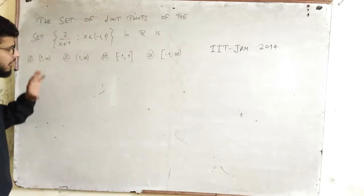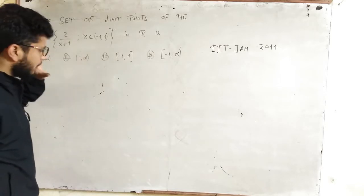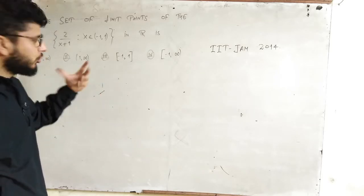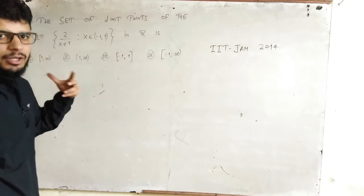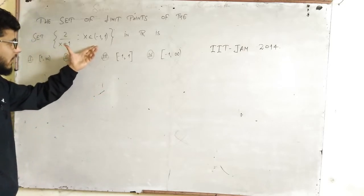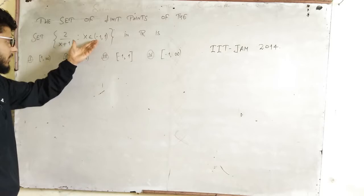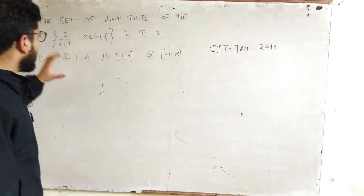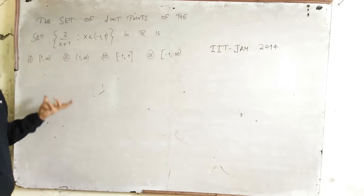The second thing is, first you need to understand what limit points you are finding. What is the question asking? Many students will make this mistake: they will try to find the set of limit points of this thing and come up with this option. So first understand what the question is asking.